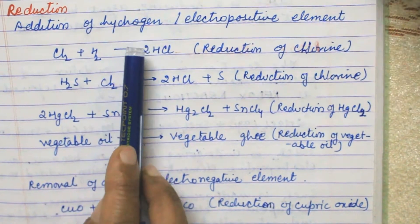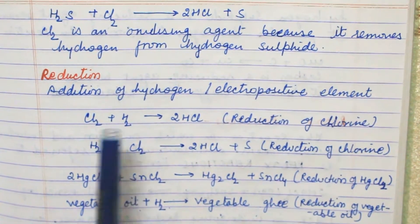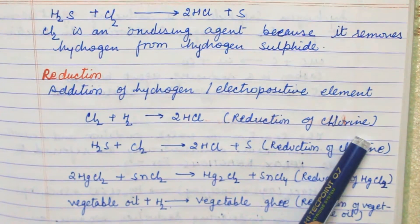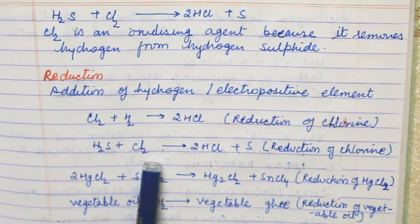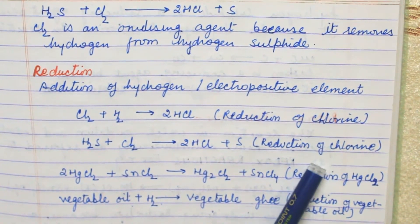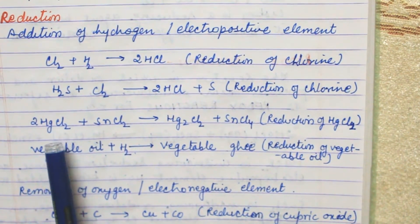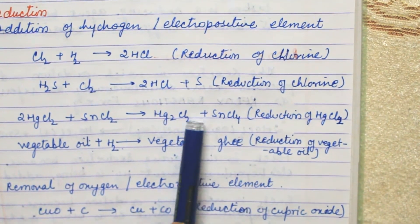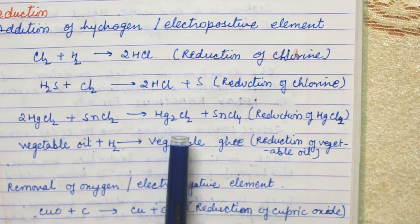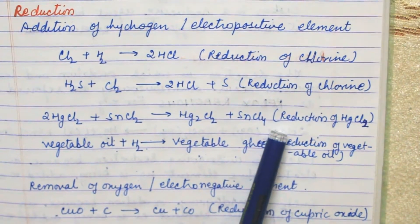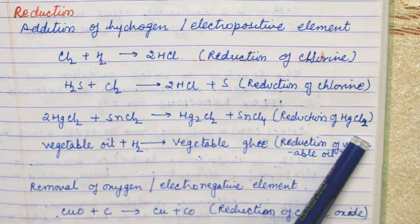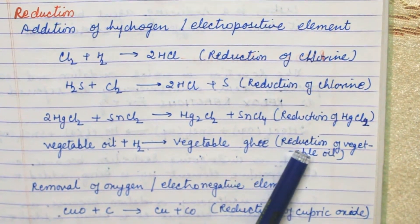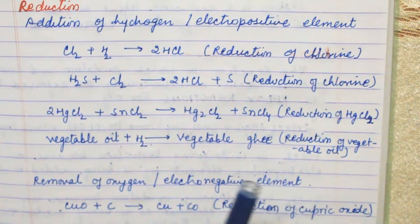Now, reduction: the first definition is addition of hydrogen or an electropositive element. Chlorine when reacted with H2 forms 2 molecules of HCl — that is reduction of chlorine. Here H2S reacts with Cl2 to form HCl and S, so reduction of chlorine takes place again. When mercury dichloride and tin dichloride react with each other, reduction of HgCl2 takes place. Also, vegetable oil when reacted with H2 forms ghee — that is reduction of vegetable oil.